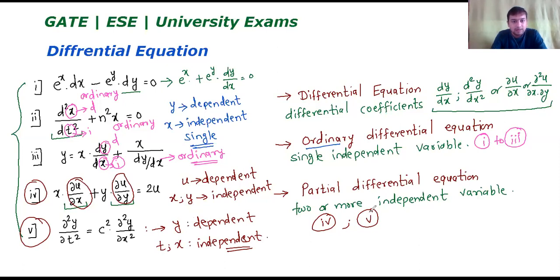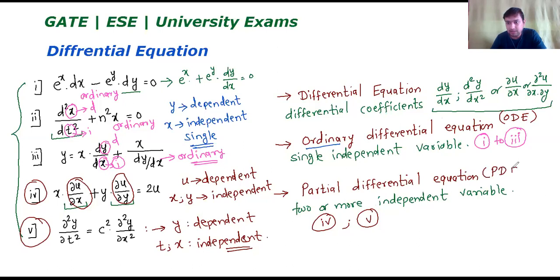So to summarize: differential equations involve differential coefficients. Ordinary differential equations contain only a single independent variable, while partial differential equations contain two or more independent variables. Ordinary differential equations are also abbreviated as ODE, and partial differential equations are abbreviated as PDE. This is a very important concept that one must know.